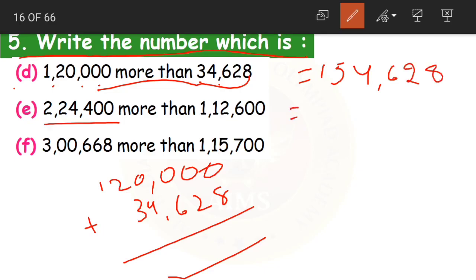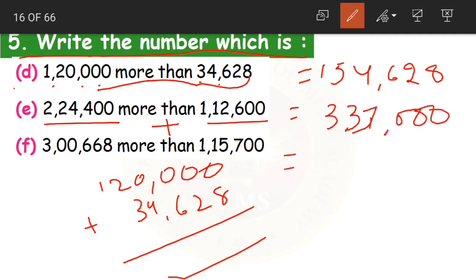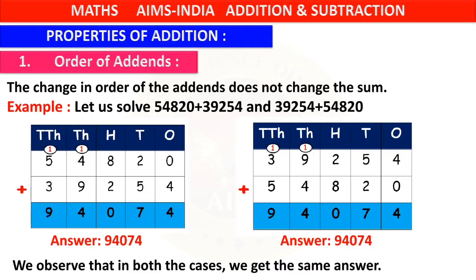For question two: two lakh twenty-four thousand four hundred plus one lakh twelve thousand six hundred — the answer will be three lakhs thirty-seven thousand. For question F: three lakhs six hundred and sixty-eight plus one lakh fifteen thousand seven hundred — the answer will be four lakhs sixteen thousand three hundred and sixty-eight. Those are all the homework answers.